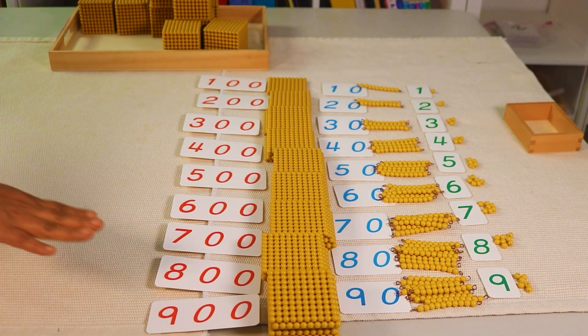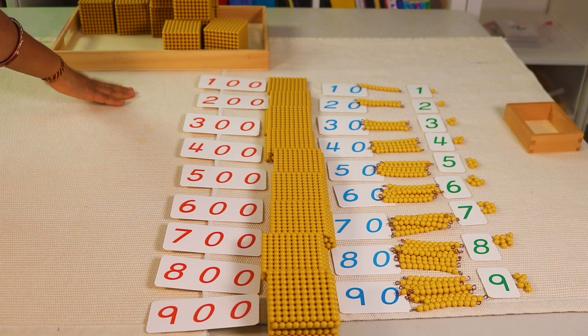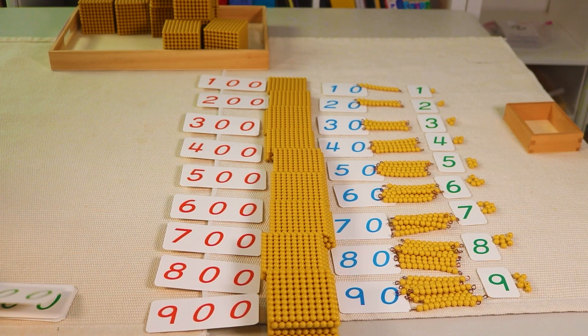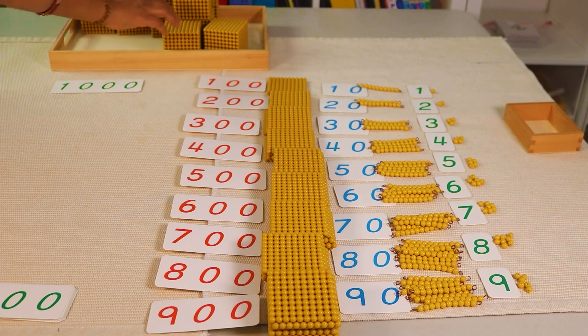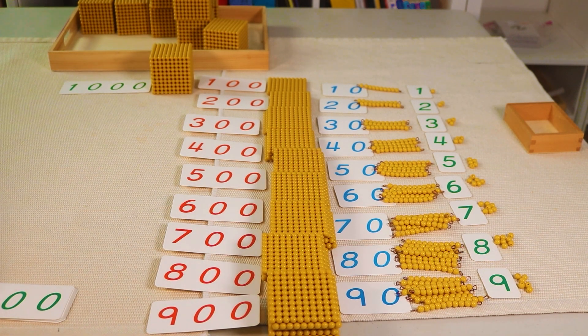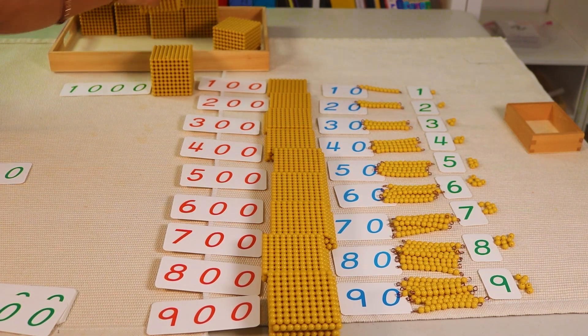You can let your child know what comes after nine hundred. That is one thousand. It's a big number, one thousand. This is one thousand. What comes after one thousand? Two thousand.